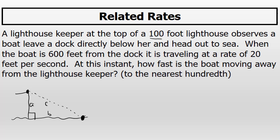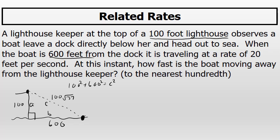It says that the lighthouse keeper is at the top of a 100-foot lighthouse, which means side A is 100. It also says that at the instant we're concerned with, the boat is 600 feet from the dock. Side C isn't specifically given, but using the Pythagorean theorem, it's easy to identify the value of C. The value of C is exactly 100 times the square root of 37.